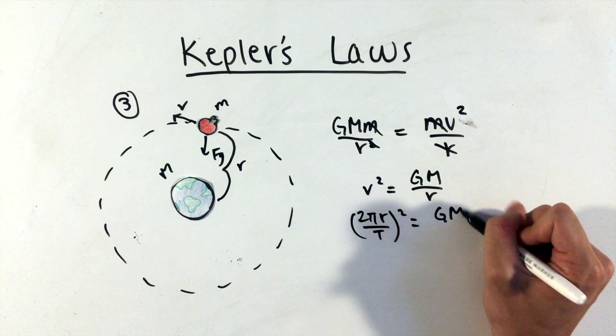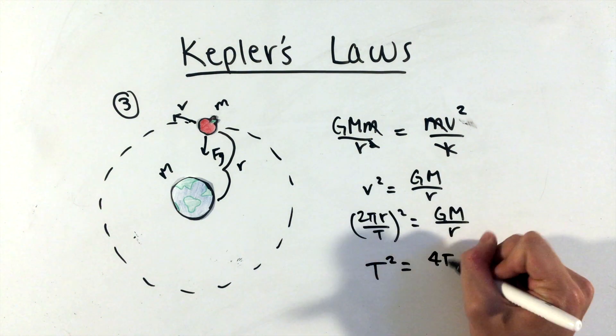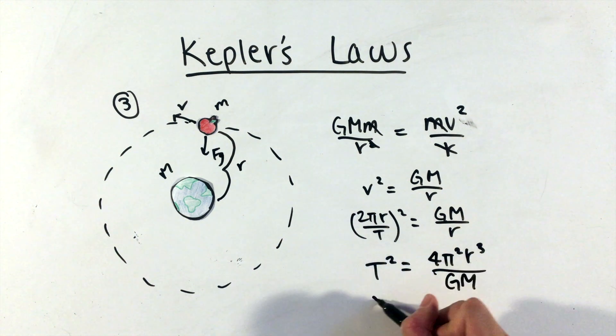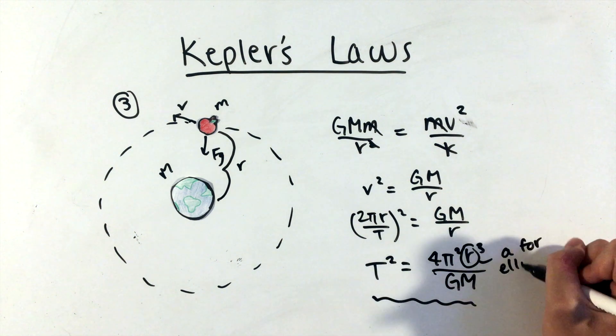Furthermore, using our circular motion knowledge that the velocity is defined as a circumference divided by the period, or distance divided by time, we can solve for the period of orbits.